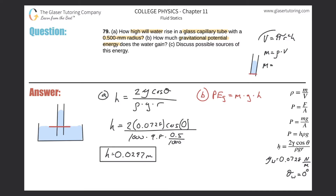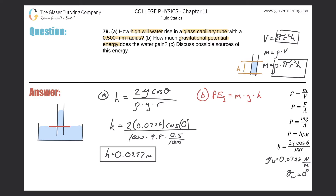So the volume of water equals the volume of the cylinder based on the height it obtained. In this picture, h is measured from the top of the water all the way down to the bottom. Substituting, the mass of the water equals density × π r² × h. This will now be our expression for mass to plug into the potential energy formula.